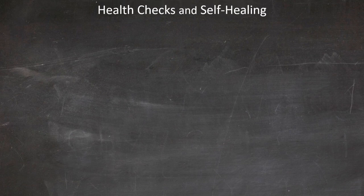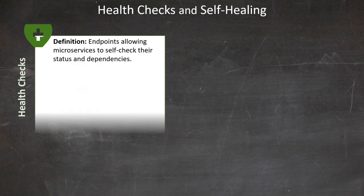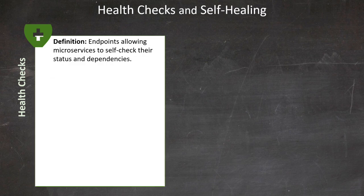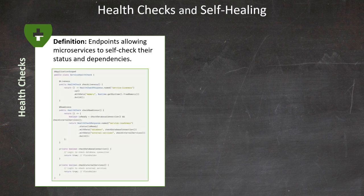Now let's explore health checks and self-healing mechanisms, which are crucial for maintaining the integrity and availability of our microservices architecture. Health checks are essentially special REST API endpoints that allow microservices to self-check their status and dependencies. These checks can assess various aspects including database connections, system properties, resource availability, and the status of other dependent services. This allows you to create custom health check procedures by implementing the health check interface and adding annotations like LIVENESS or READINESS to your classes.